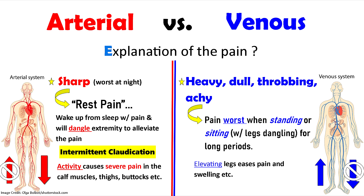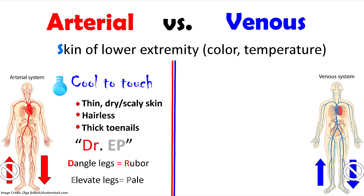S is for skin of the lower extremity. As a nurse, you want to look at the color of the extremities, compare them, and feel the temperature — is it cold or warm? For arterial disease, they have an issue with perfusion, so that extremity is not going to be perfused. It's going to be cool to the touch. Because that skin is not getting the nutrients it needs, the skin is going to appear thin, dry, and scaly. It's probably going to be hairless and have thick toenails.